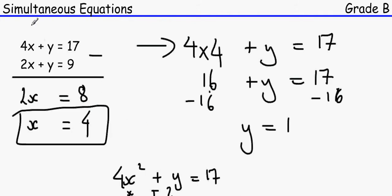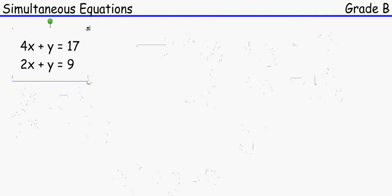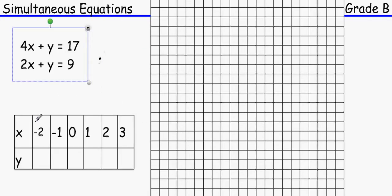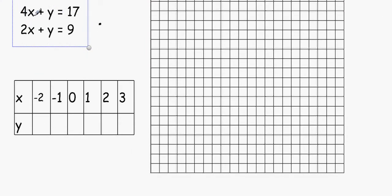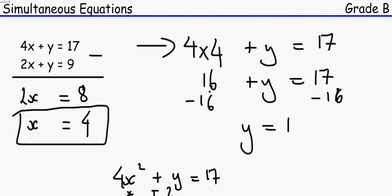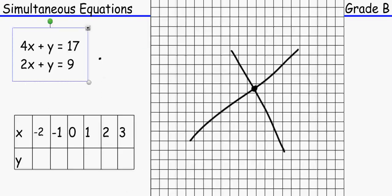The graphical method involves plotting both equations on a graph. The point of intersection of the two lines gives the solution. For example, if the intersection is at coordinates (4, 1), then x equals 4 and y equals 1 — matching our earlier answers.